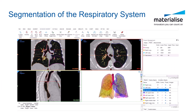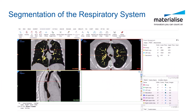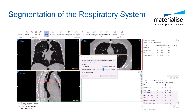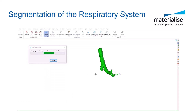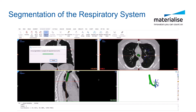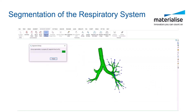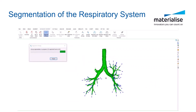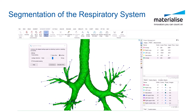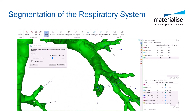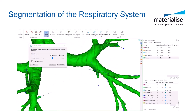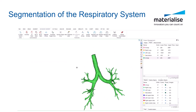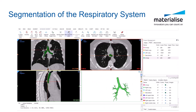Auto-segment airways in a fast, flexible, and effective way, and auto-segment the lungs and lobes with one click. Indicate the start of the trachea and let the tool run all by itself. Preview the 3D in real time and fine-tune any potential errors interactively. Create an airway centerline where all the branches are automatically labeled for you.